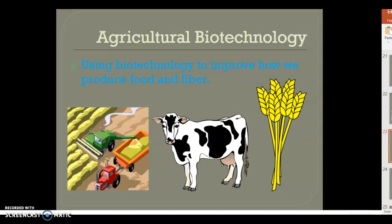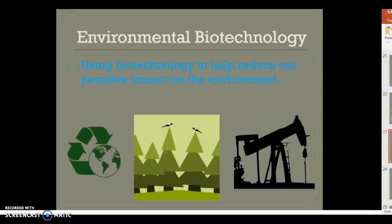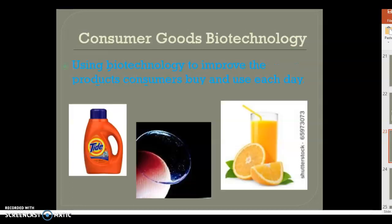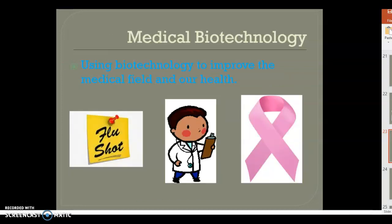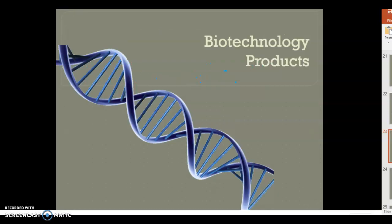Agricultural biotechnology uses biotechnology to improve how we produce food and fiber. Whether you believe it or not, the food that we eat and how we raise our animals and livestock involves biotechnology. Environmental biotechnology uses biotechnology to help reduce our negative impact on the environment. Consumer goods biotechnology improves products that we as consumers buy and use every day. And medical biotechnology uses biotechnology to improve medicine and our health.